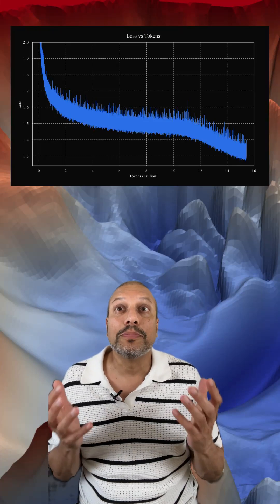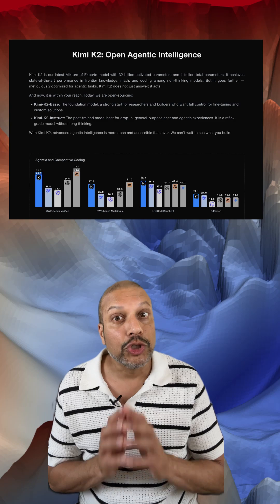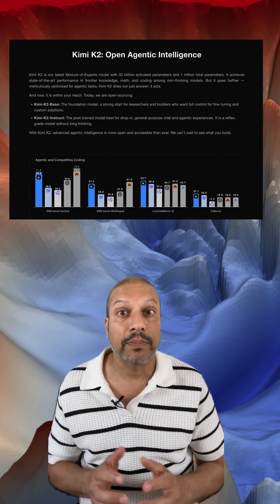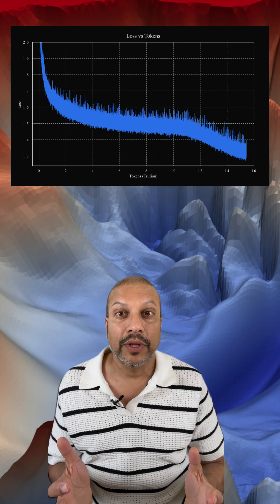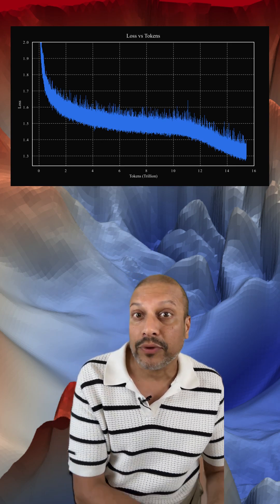People are calling this the most beautiful thing in AI training. It's also the secret behind a new trillion-parameter open-source model named Kimi. It's a smooth loss curve. Let me break down why this matters and what Moonshot AI did differently.